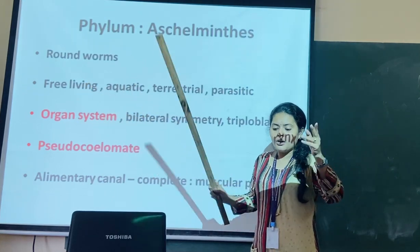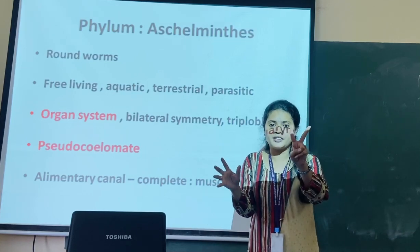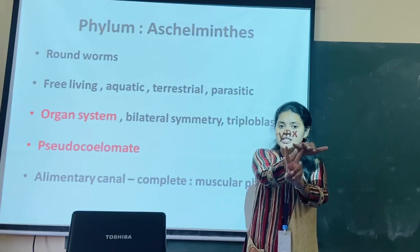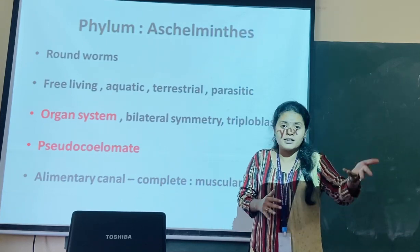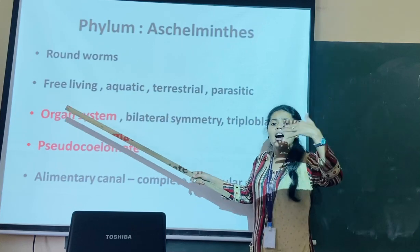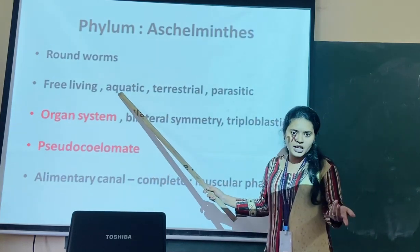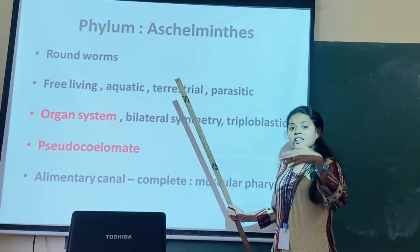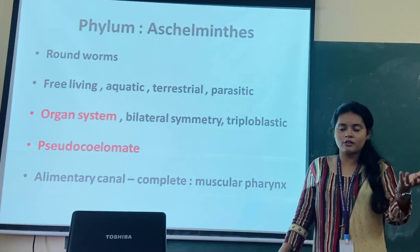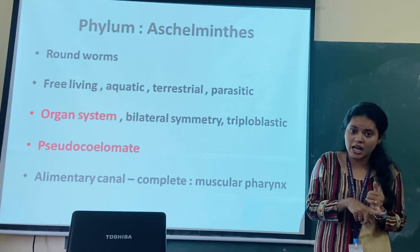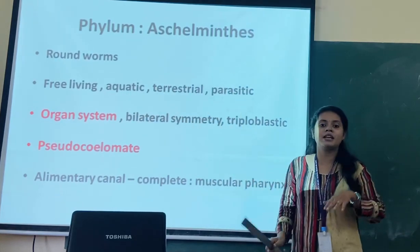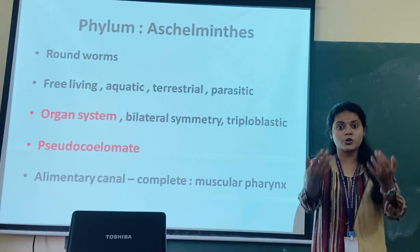Now some organisms are free living, and some are parasitic - these are the two categories. When some organisms depend on other organisms for nourishment, they are parasitic. Organisms not dependent on others for nourishment are free living. Free living organisms can be found in aquatic or terrestrial conditions. Parasitic forms can be parasitic in plants or in the bodies of other animals, including human beings.